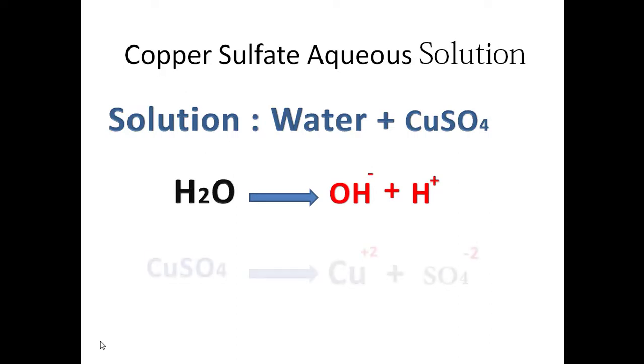And as we know, we have four types of ions as a result of splitting water molecules to hydroxide ions and H+, and the dissolving of copper sulfate in the solution, which is copper +2 and sulfate ion.